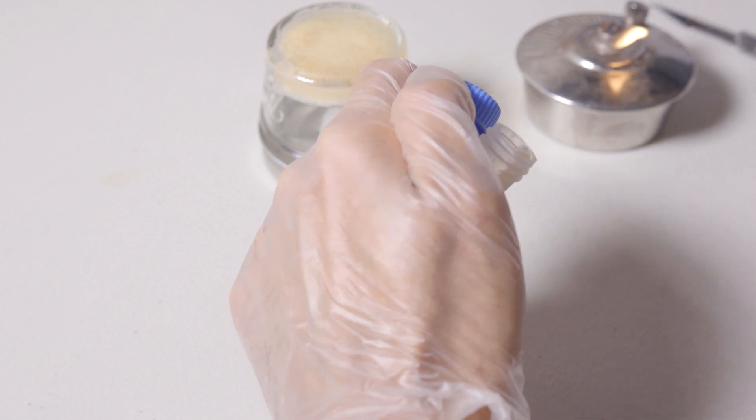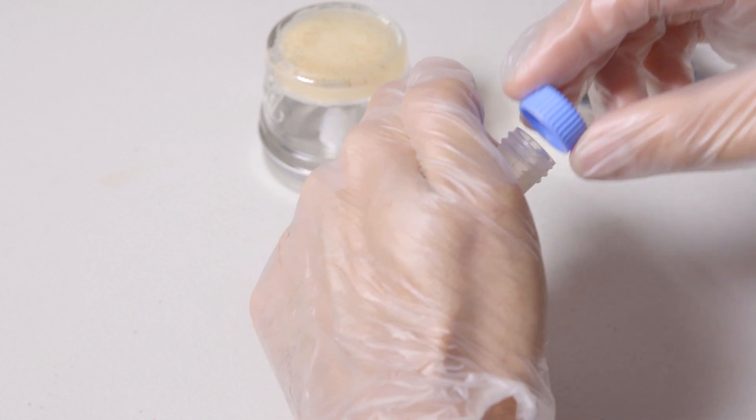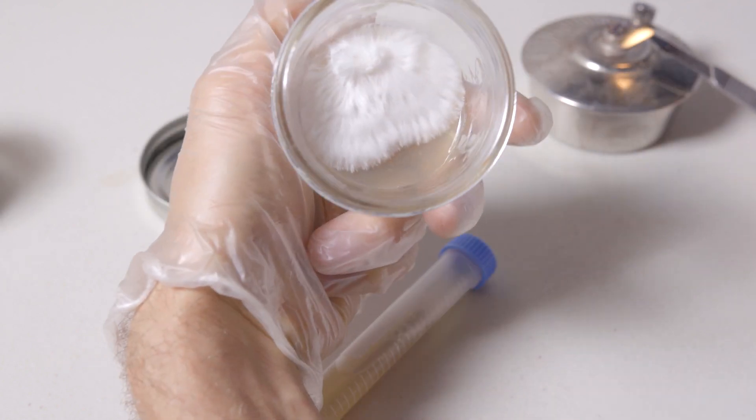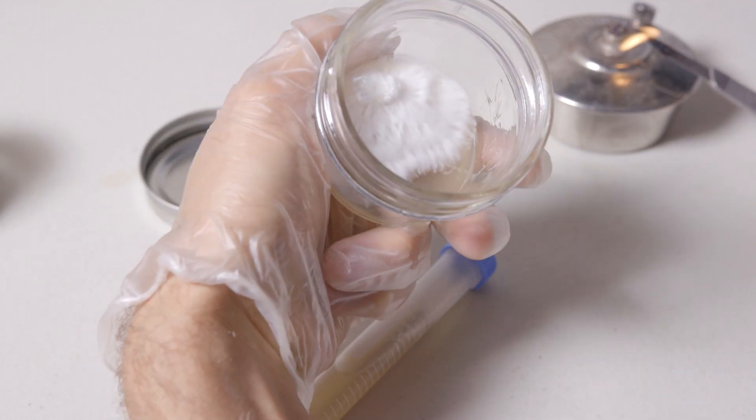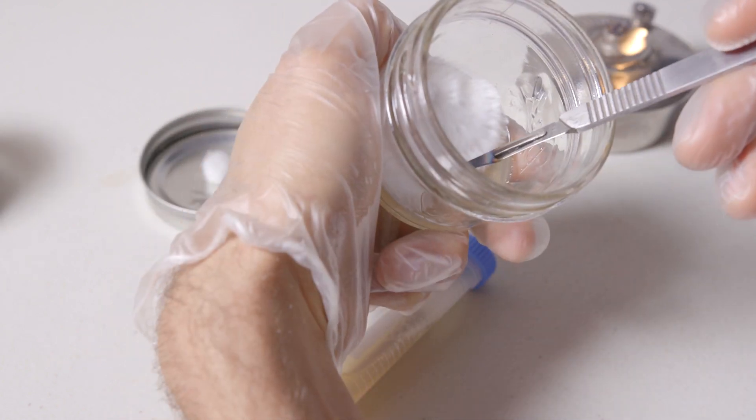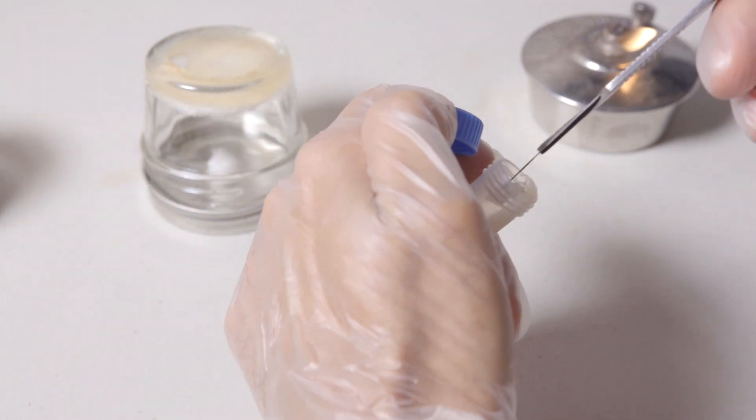Here I poured my agar plate a little bit thick so I was having trouble getting the wedge into the slant. With this plate on the other hand, I poured the agar pretty thin so when I took my transfer, I'm able to put it into my slant relatively easily.